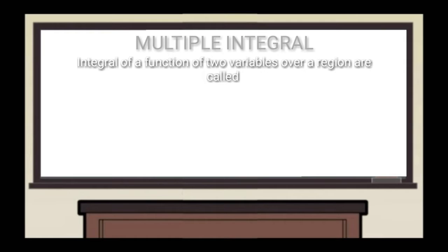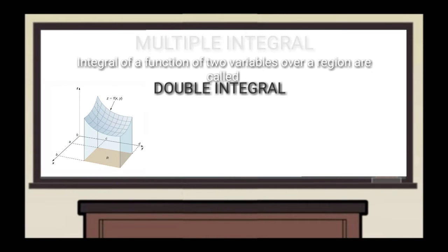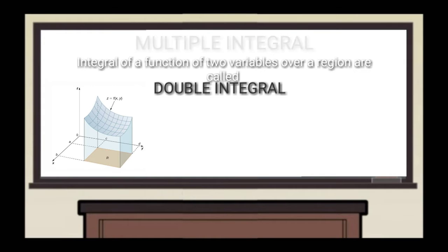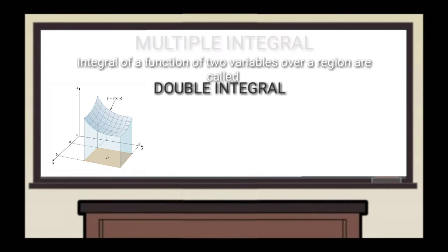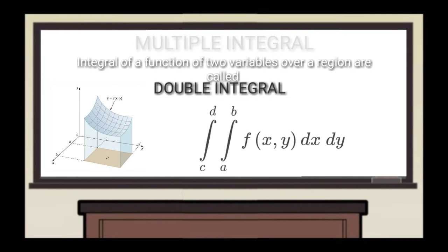The integral of a function of two variables over a region in R² is called a double integral. Just as the integral of a positive function of two variables represents the volume of the region between the surface defined by the function on the three-dimensional Cartesian plane where z equals f(x, y). This volume is represented by the double integral of f(x, y) dx dy, or equivalently the double integral of f(x, y) as x ranges from a to b, y ranges from c to d.